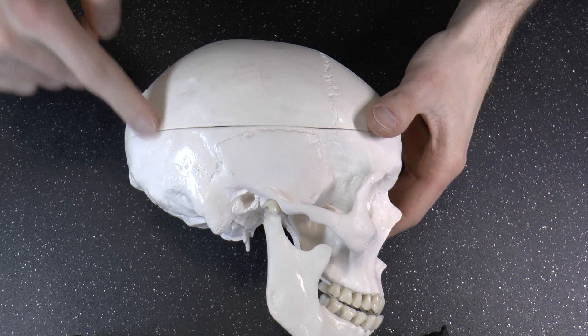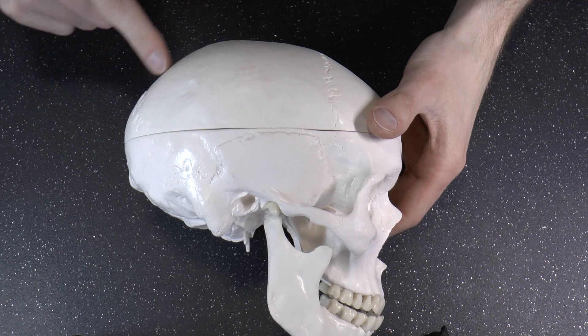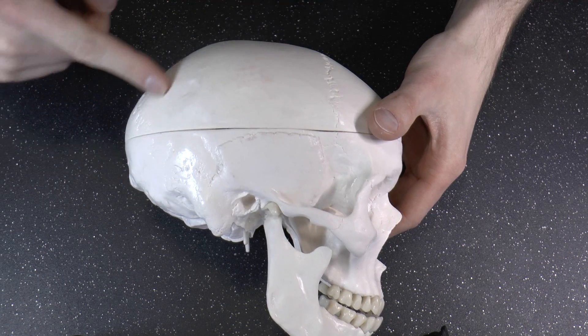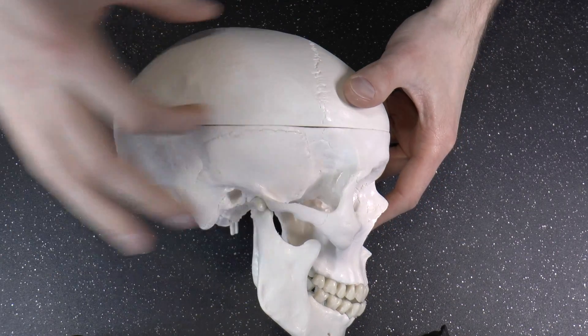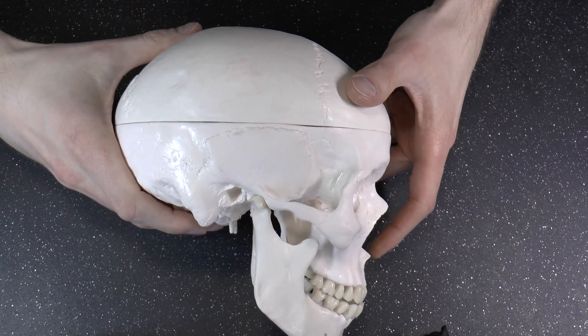Then you have parietal. The Latin word paries means wall, and this kind of looks like a wall, right? It's kind of a big, somewhat flat-ish structure.